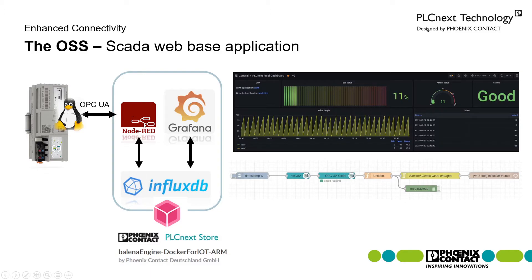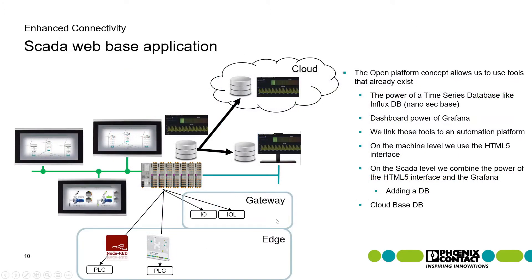I am also installing Node-RED, which is a great software tool for exchanging between different types of languages, inputs, and outputs. In this case, I use Node-RED to connect to the PLC either via OPC or via REST API — a simple way to pull tags from the PLC. I convert the format and push the data into InfluxDB, then use Grafana as a dashboard to visualize what I retrieve from the database.